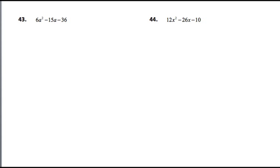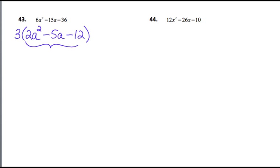Number 43 has a greatest common factor in it — it looks like that's a 3, and you should always take that out first. So I'm going to take out the 3 and I'll need a 2a squared, then minus 5a, then minus 12. If you multiply that 3 through the trinomial, you get what you started with. Now I have to factor this trinomial.